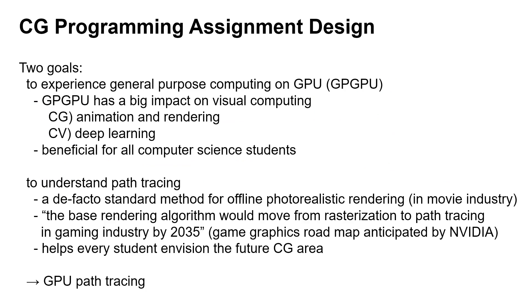The graphics programming assignment has two goals: to experience general purpose computing on GPU, also known as GPGPU, and to understand path tracing. GPGPU has a big impact on visual computing. In computer graphics, GPGPU has been applied to animation and rendering for substantial improvement in interactivity. While in computer vision, high-speed and high-precision object detection and high-definition scene estimation were realized because deep learning became more practical with the advent of GPU. GPGPU is most likely to continue to lead visual computing innovation, so experiencing GPGPU is beneficial for all computer science students.